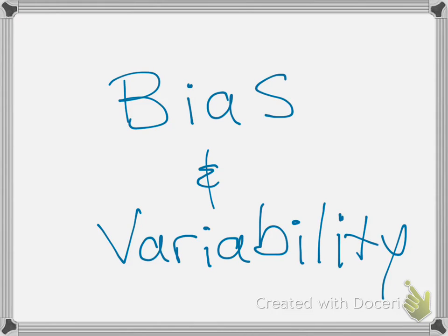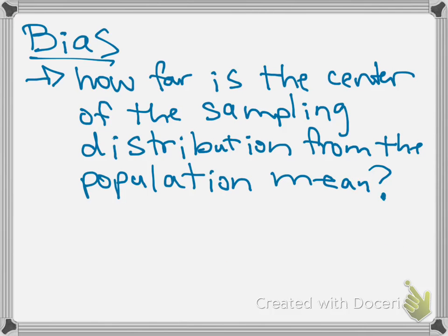This section of chapter 9 deals with bias and variability of sampling distributions. Bias, which is a word that you're probably familiar with, in the statistical setting simply means how far is the center of your sampling distribution from the population mean.